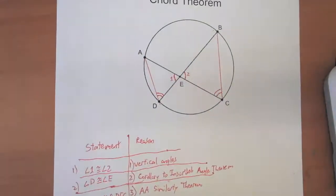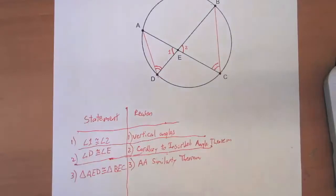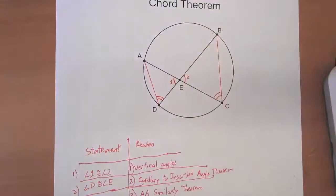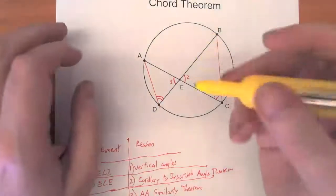Here was our figure and we managed to prove that this triangle on the left is similar to this triangle on the right. Because we know that, we can say that there is a proportion between the corresponding pairs of sides in these two triangles.